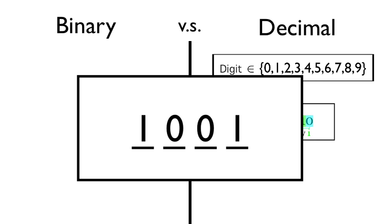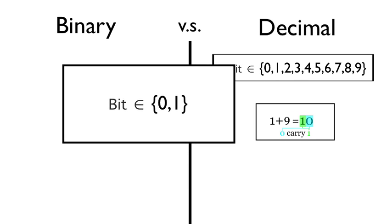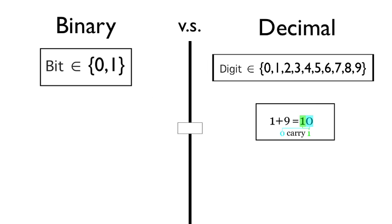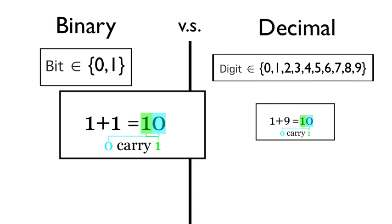In binary, we have bits, and each bit can have one of 2 states. They can either have a 0 or a 1. When we add 1 to the maximum state 1, we get 1, 0, just like we did in the decimal system.